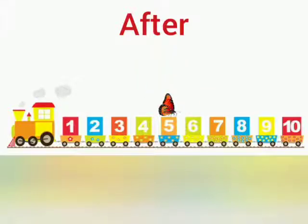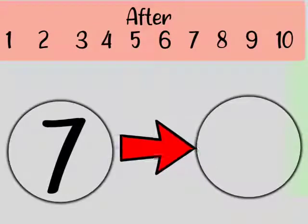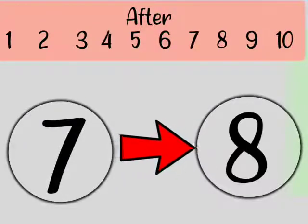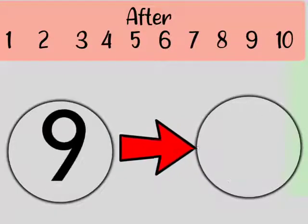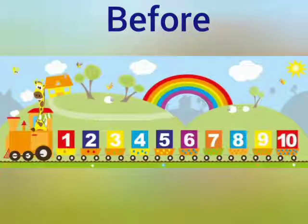The butterfly is on number 5. After 5 is 6. After 5 is 6. Now let's learn about before.